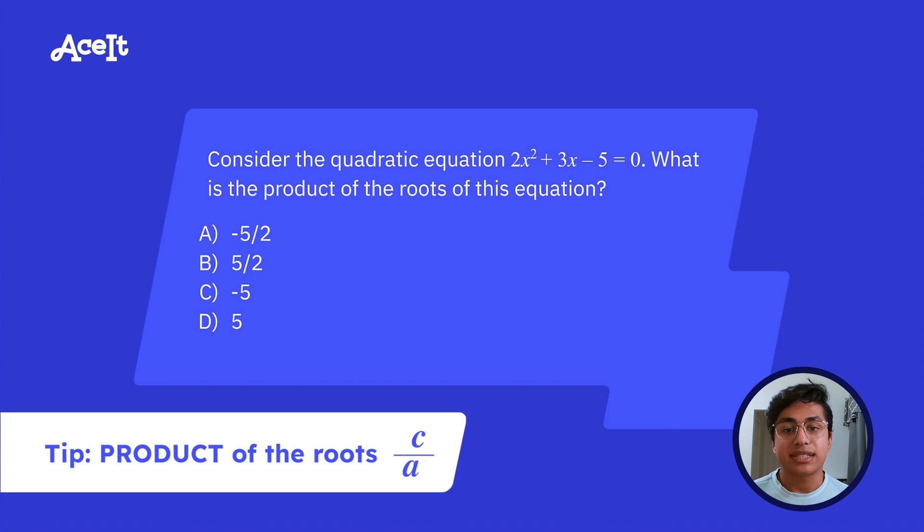But the equation for the product of the roots would be C/A. So let's take a look at this example here. We have 2x² + 3x - 5. So based on our standard form, we know that our C is -5 and our A is 2. Meaning that C/A would be answer choice A, -5/2.